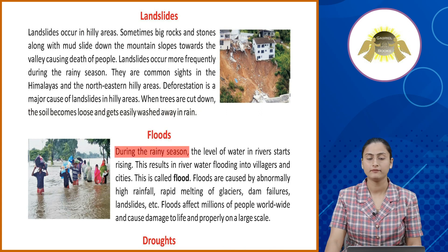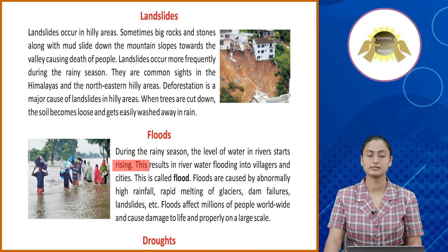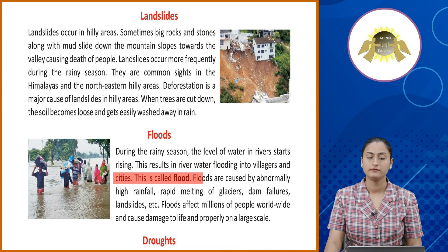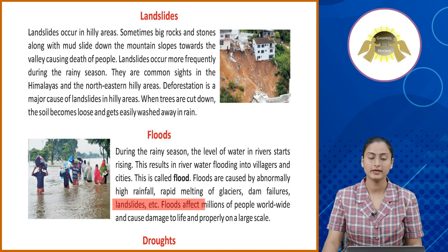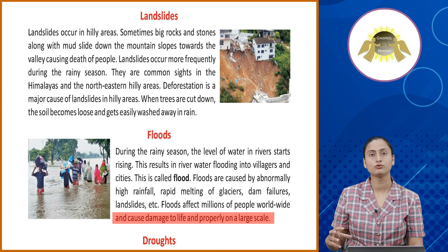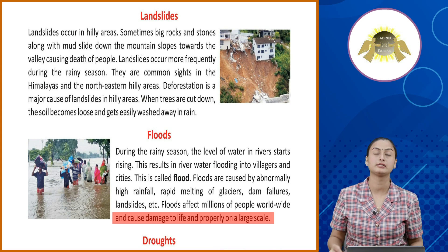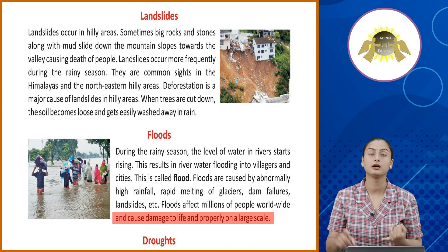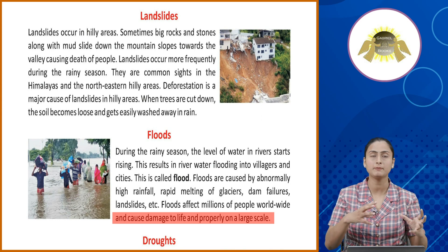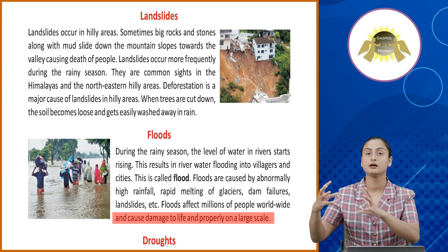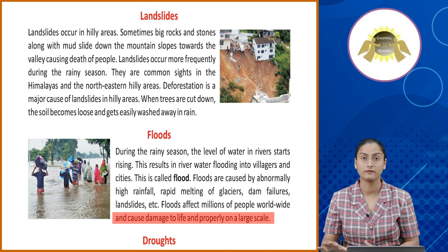Floods. During the rainy season, the level of water in rivers starts rising. This results in river water flooding into villages and cities. Floods are caused by abnormally high rainfall, rapid melting of glaciers, dam failures, landslides, etc. Floods affect millions of people worldwide and cause damage to life and property on a large scale. Floods multiple reasons ki wajah se hoti hai jaise heavy rainfall, cloud burst, dam failure, glaciers ka melt hona. Isi ki wajah se paani river se shehron aur gaon ki taraf aane lagta hai aur wo isko wash away bhi kar deta hai.